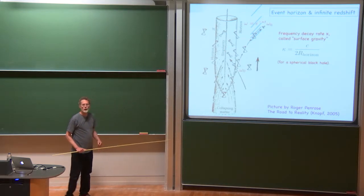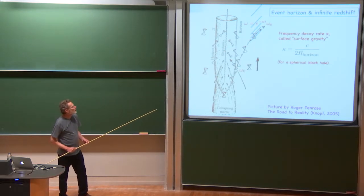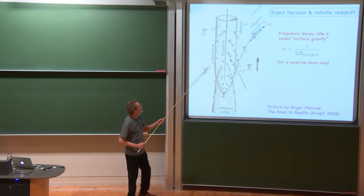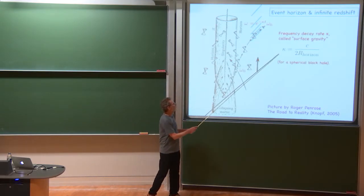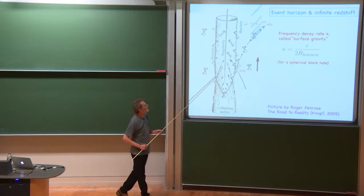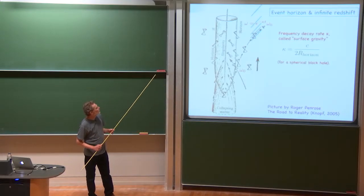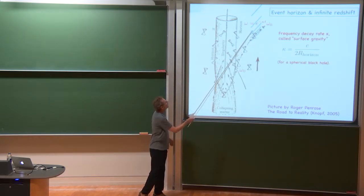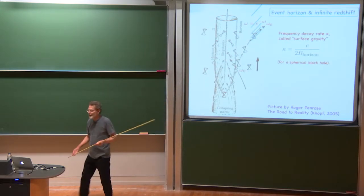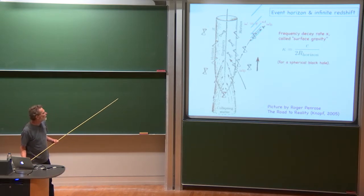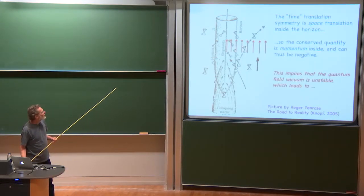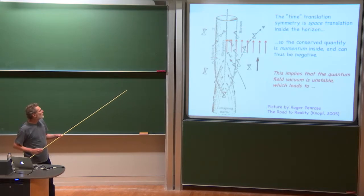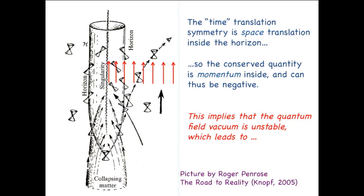Kappa is called the surface gravity of the black hole. And it's the speed of light for a spherical black hole divided by twice the Schwarzschild radius. So as time goes on, this exponential redshift factor gets arbitrarily small.